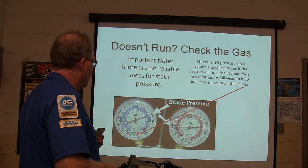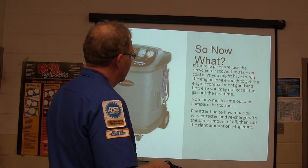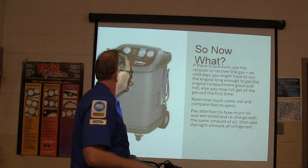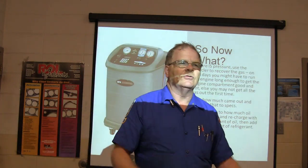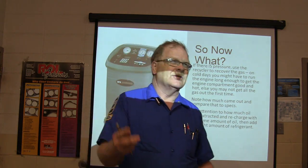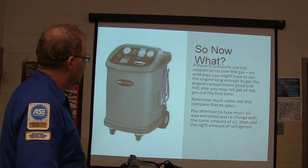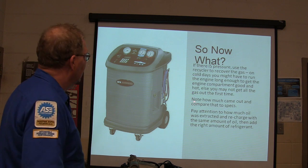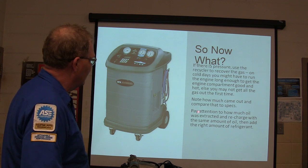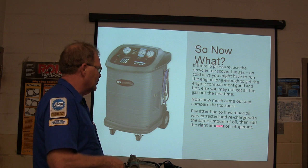A full vacuum is 30 inches on the gauge when you're evacuating the system. If there's pressure, use it to recover the gas as long as you've got the right refrigerant in there. On cold days, you may need to run the engine long enough to get things warm — at 50 degrees you're not going to get all the juice out. Note how much came out and compare to the spec. The machine tells you what it pulled out — it's weighed on a scale. Pay attention to how much oil was extracted and recharge with the same amount.